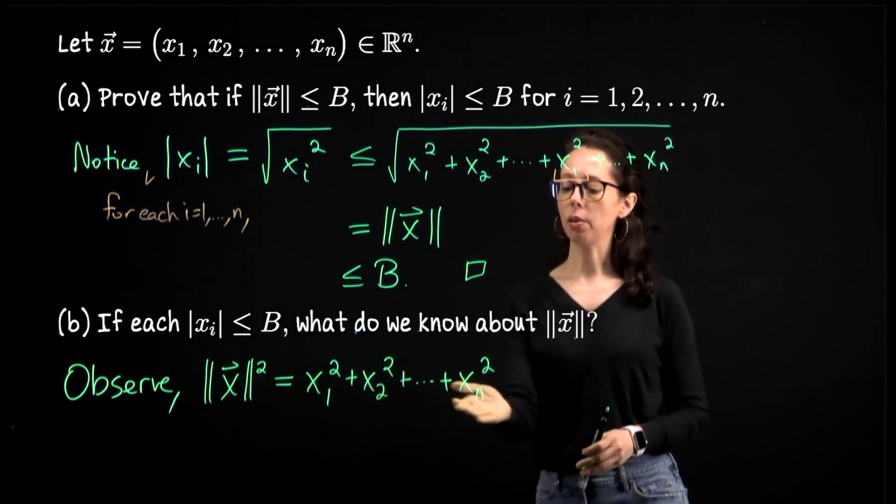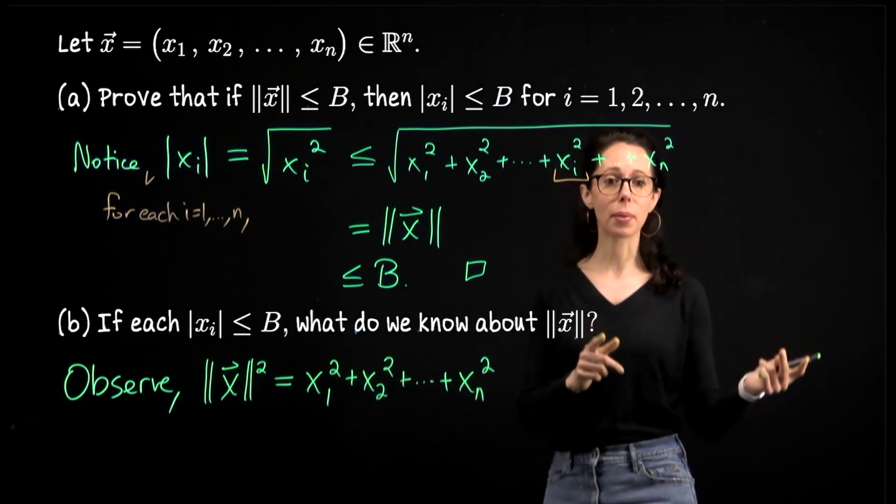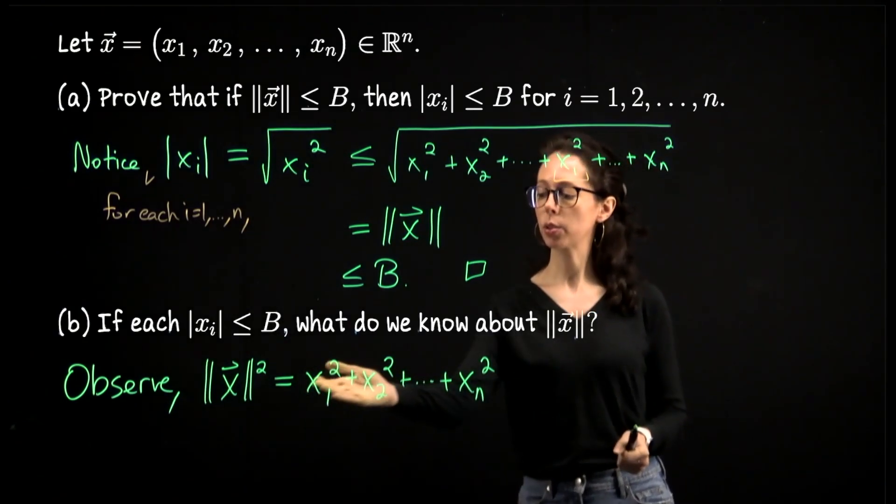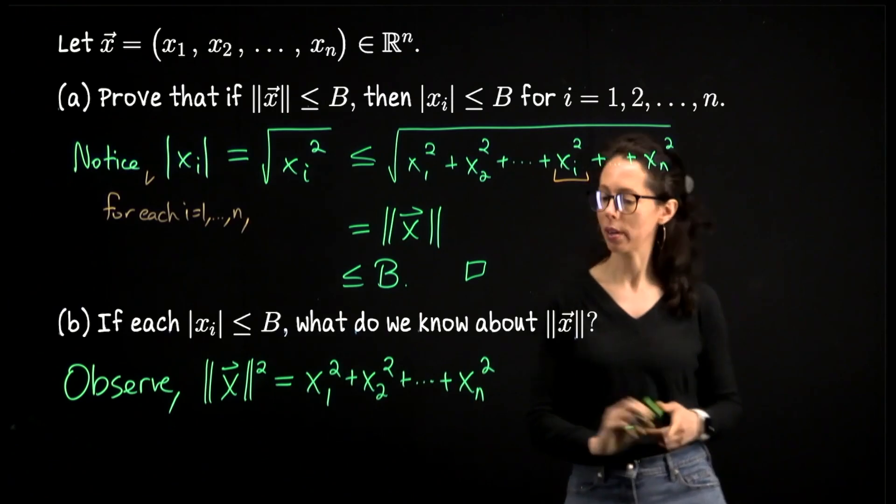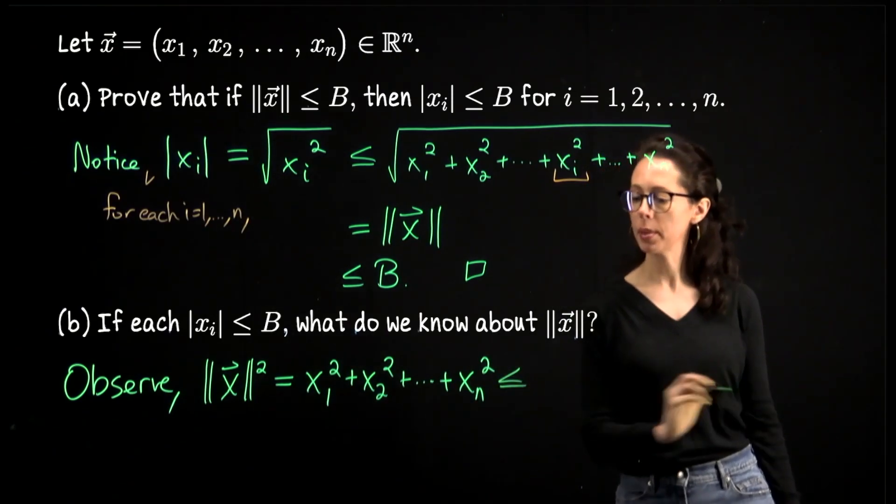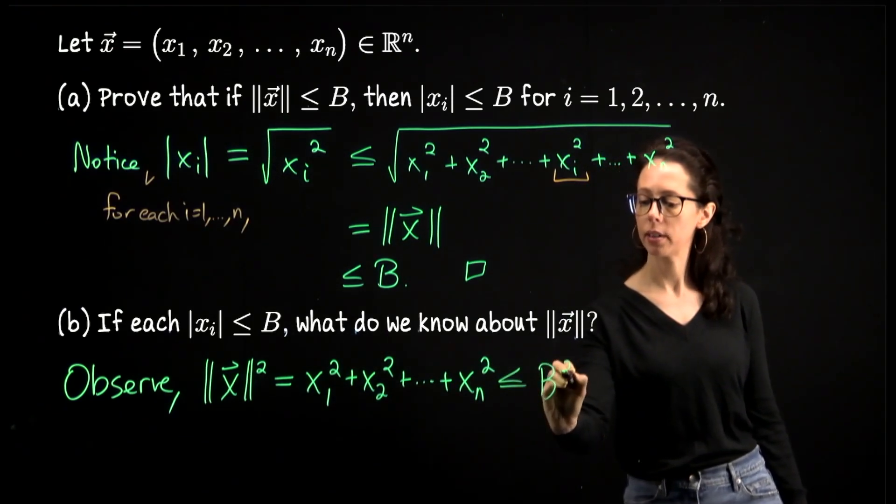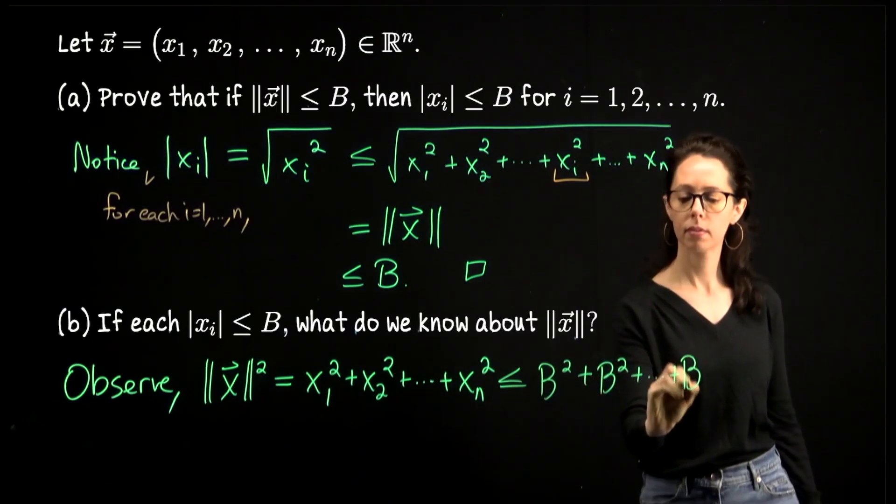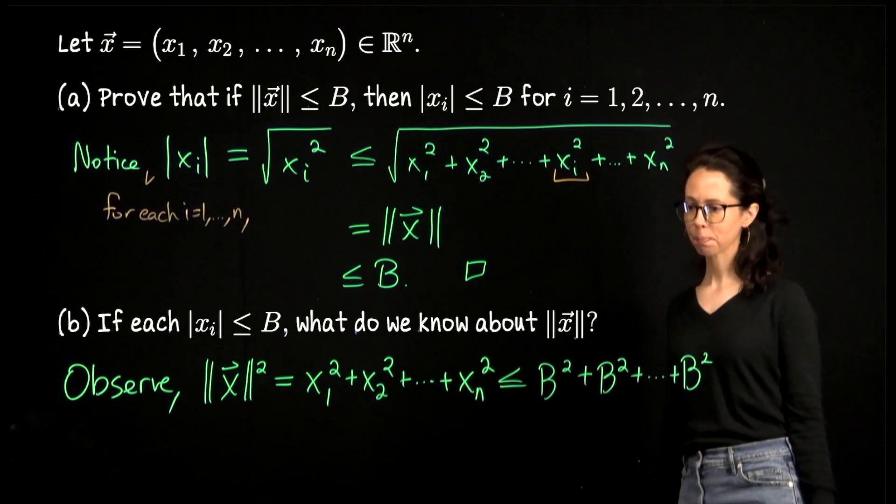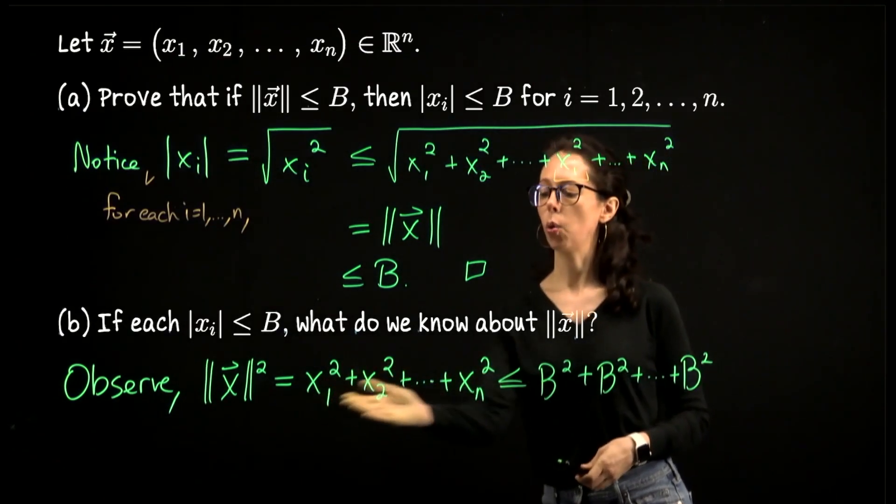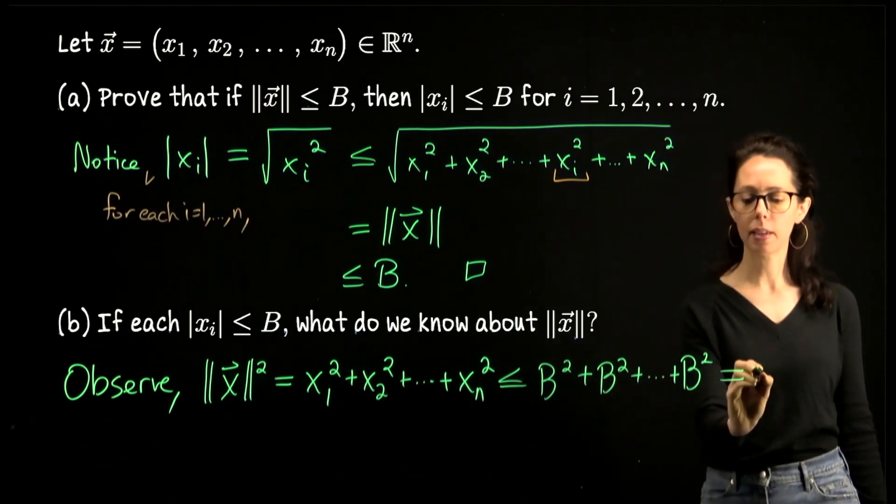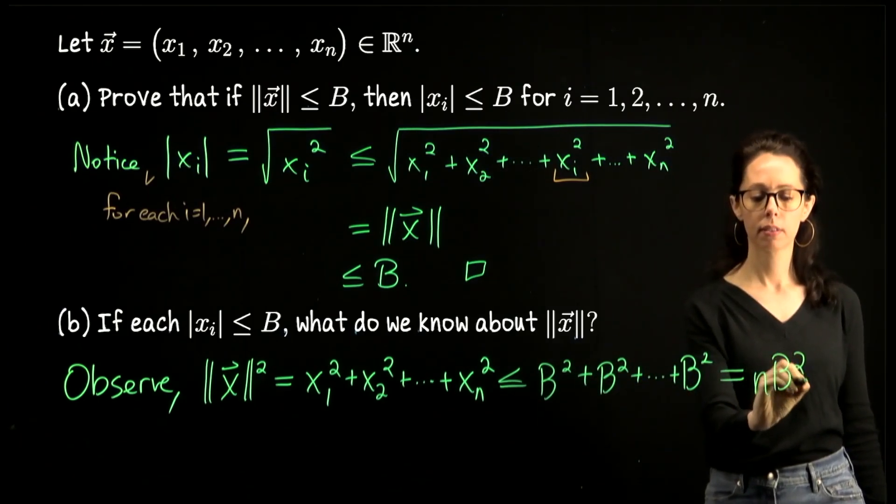So if I took each coordinate now and replaced it by B, if anything, we go up in size. So this quantity here, the sum is less than or equal to B squared plus B squared all the way through B squared. We go up in size, B squared plus B squared. There are n coordinates here, so there are n copies of B squared. This sum is equal to n*B squared. Like that.